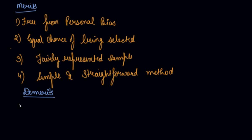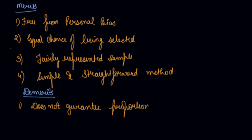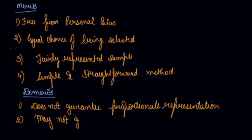The demerits of random sampling are: first, it does not guarantee proportionate representation. For example, if you have a universe of 100 and want to select a sample of only 10 or 20, random sampling does not guarantee proportional representation of different items in the universe. Second, it may not give weightage to certain important items.